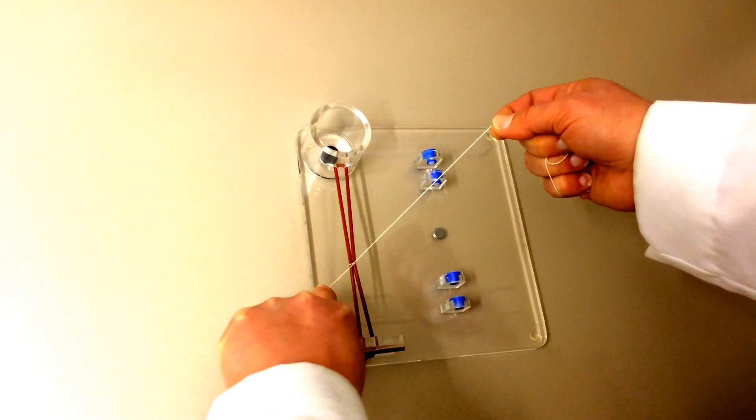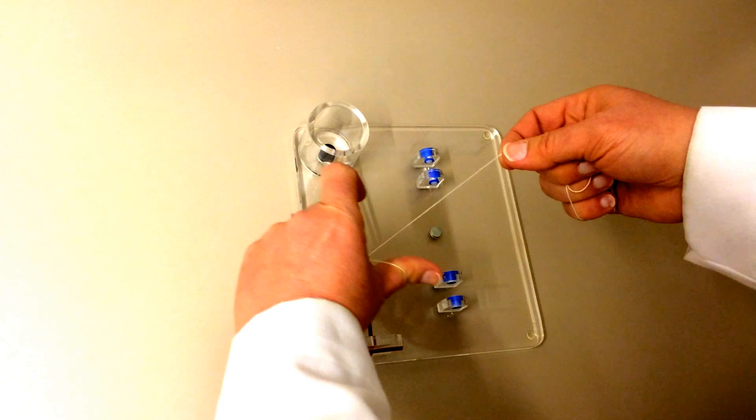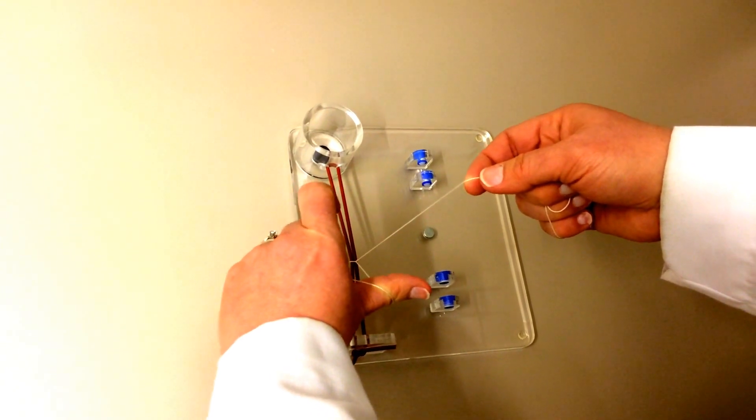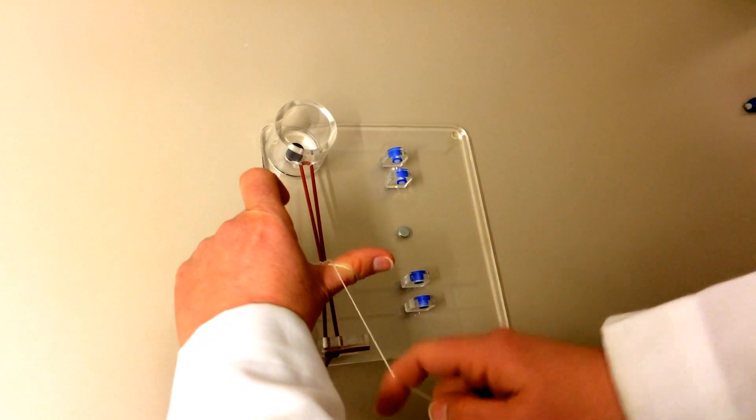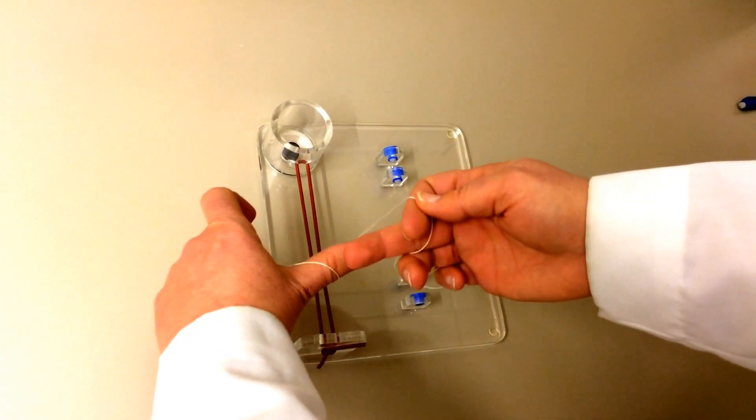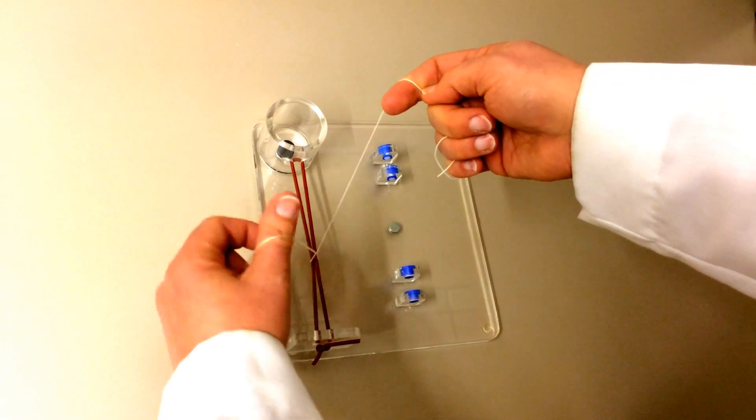The second throw is going to be when you come in with your thumbs. You're going to again have it parallel to you. Same thing, bring it over, cross over.